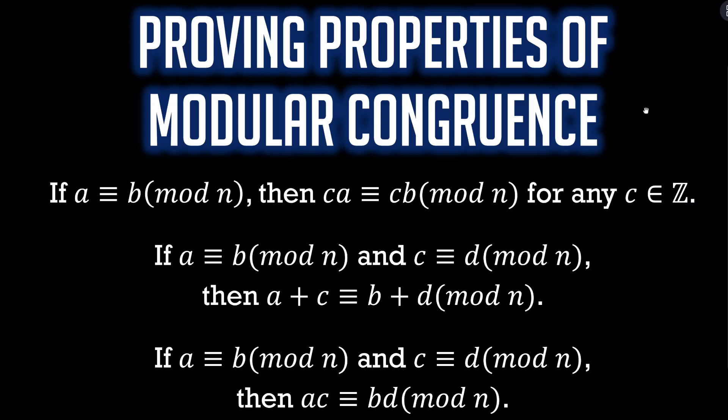The proofs really aren't that bad. You make your assumption, you unpack the definition, you figure out where you want to go, and then you do some algebra to get there. There aren't really any tricks or clever insights needed — it is kind of moving symbols using definitions.